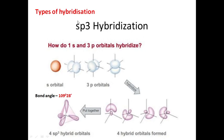In SP3 hybridization, there will be one S orbital and three P orbitals. The three P orbitals are Px, Py, and Pz — three orientations. These three P orbitals and one S orbital hybridize together.